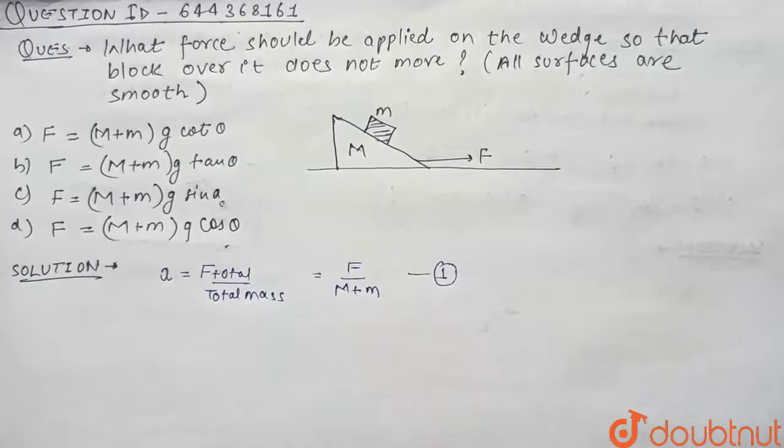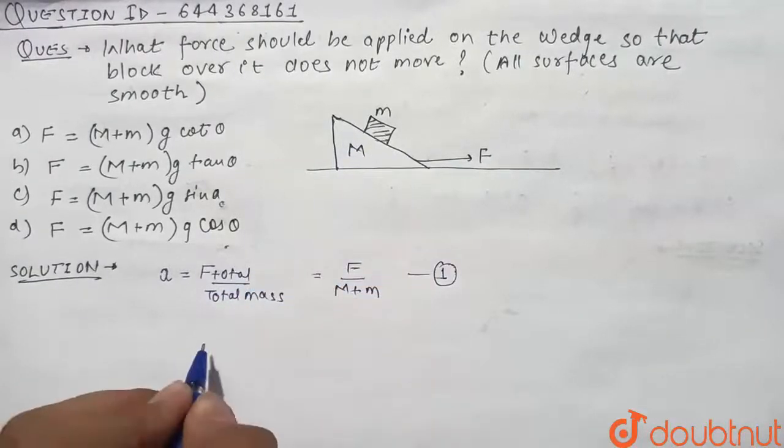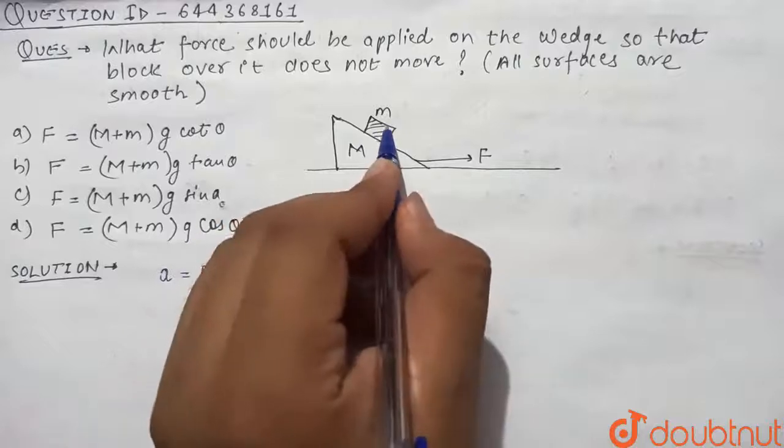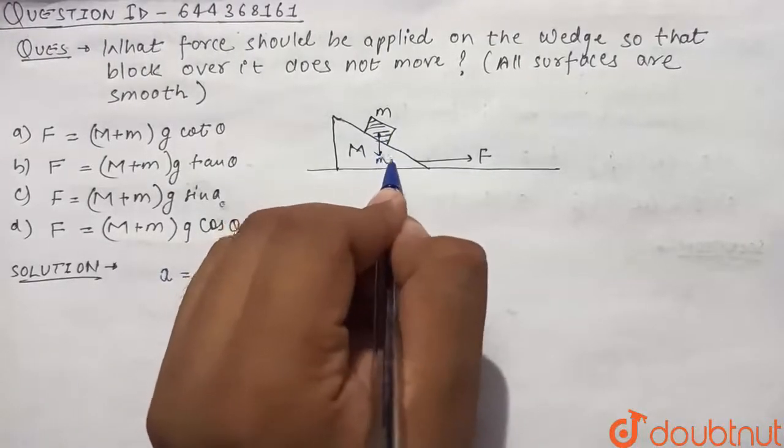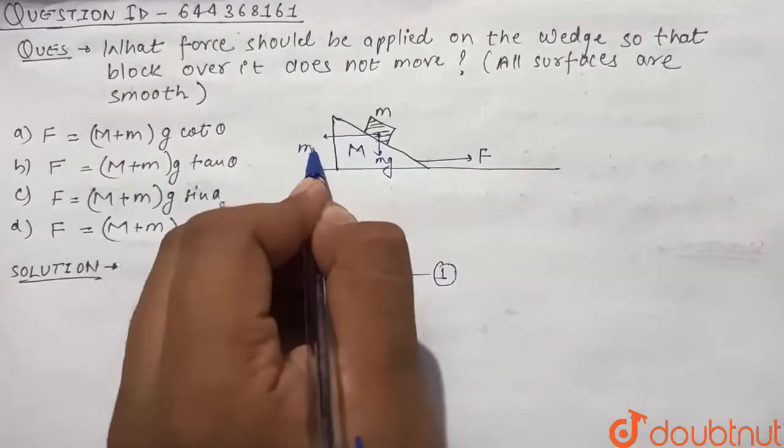Now if we go in frame of reference of the wedge, then the forces applied on the mass m are mg downwards due to gravity, and ma force leftwards because we have gone in the frame of wedge.